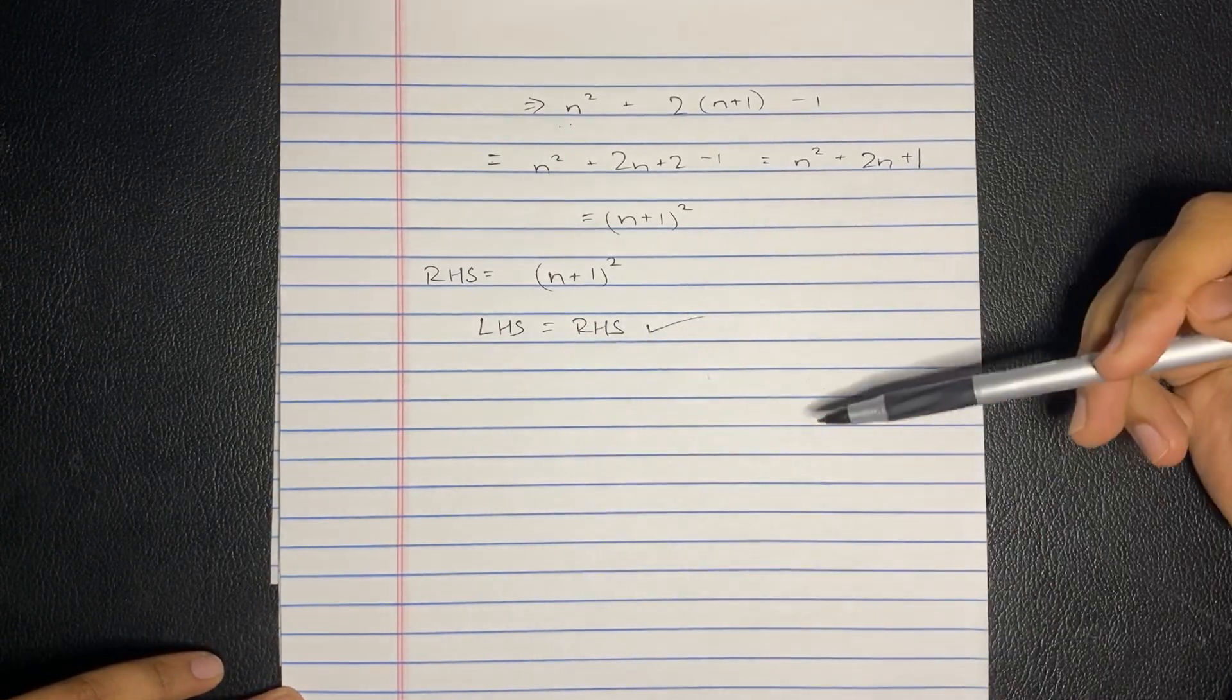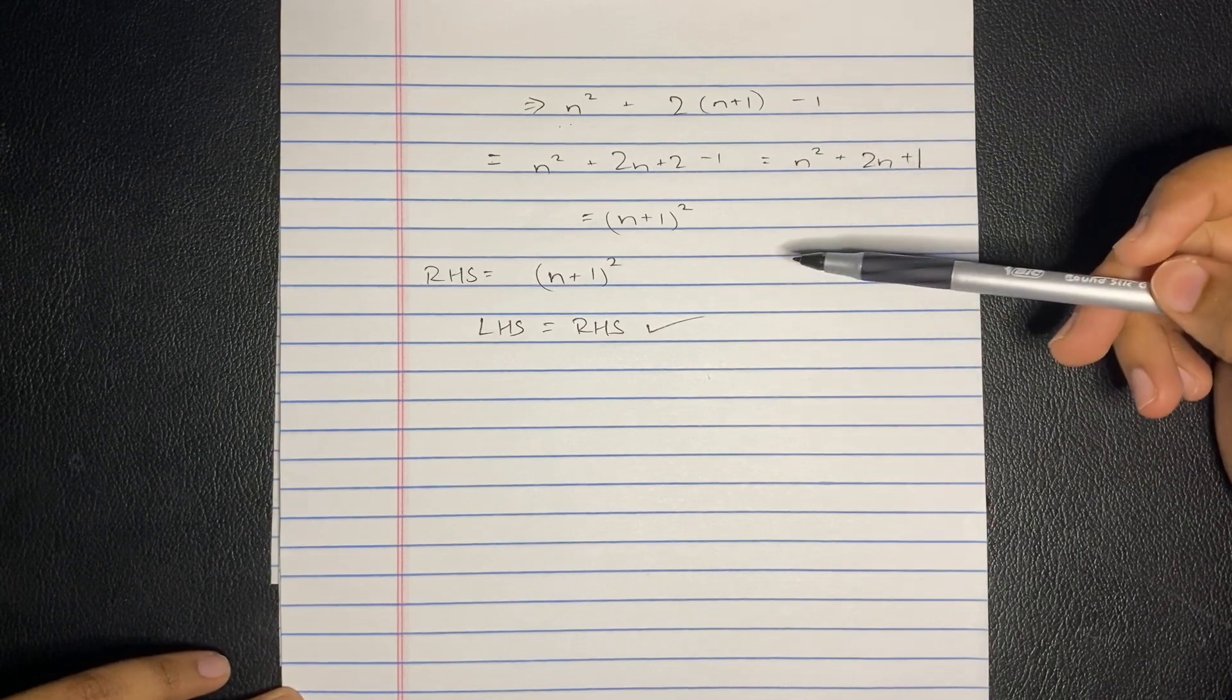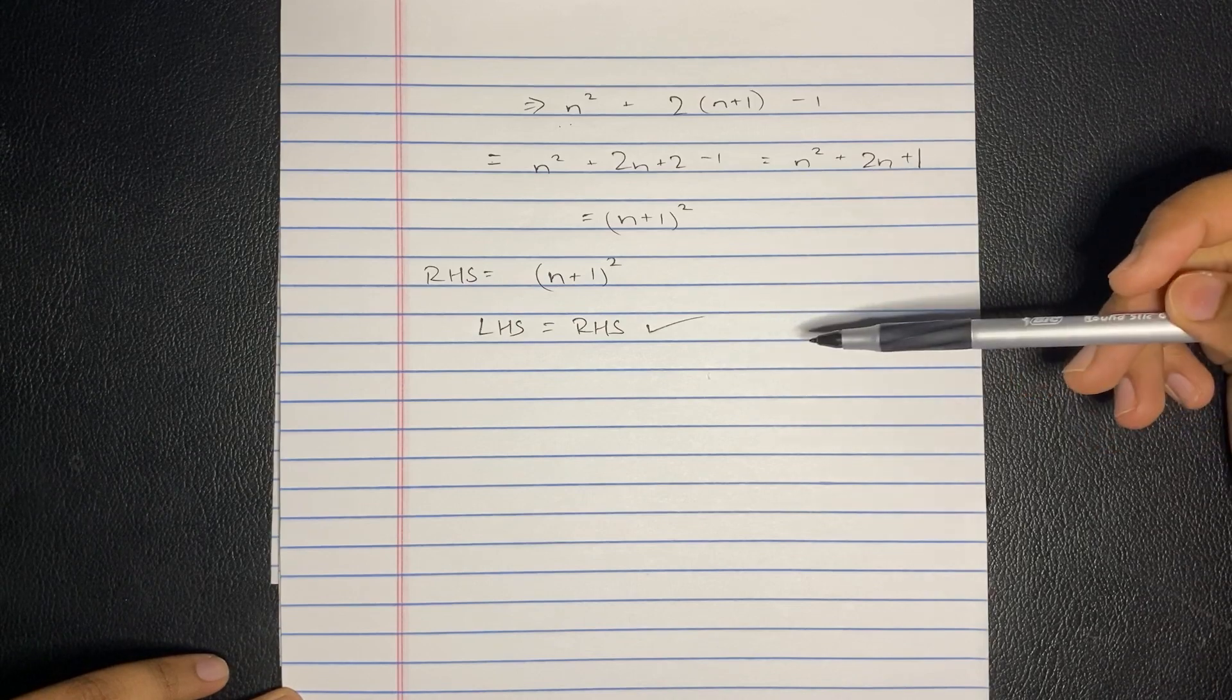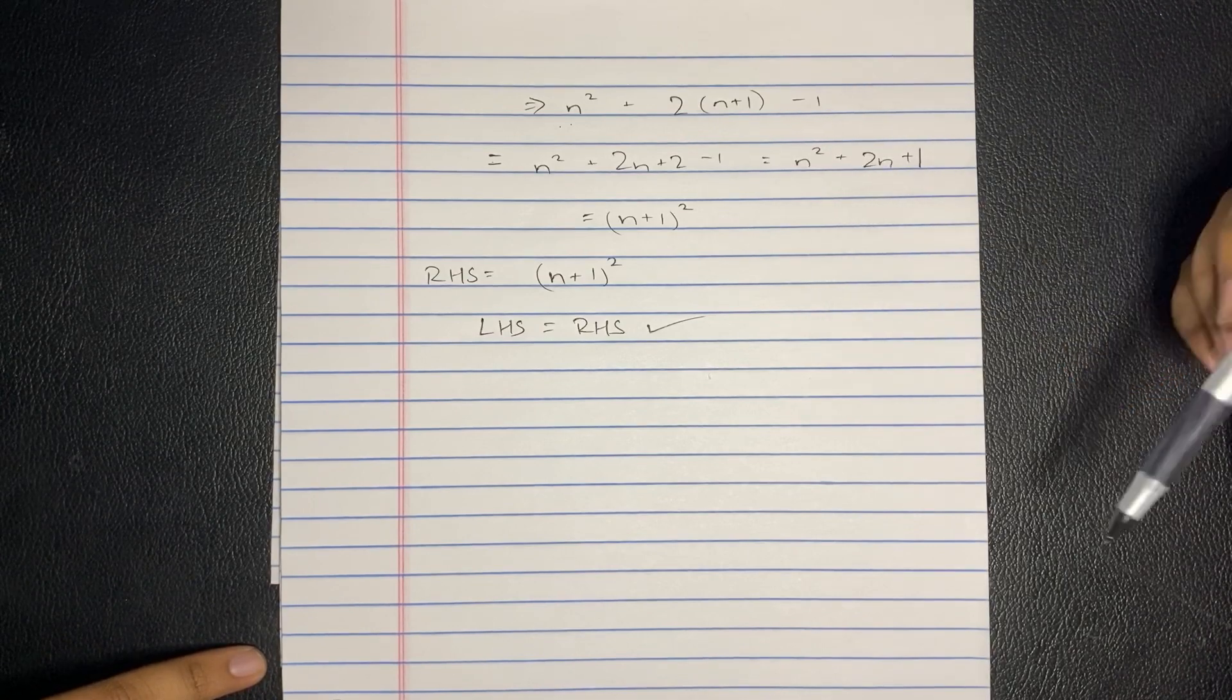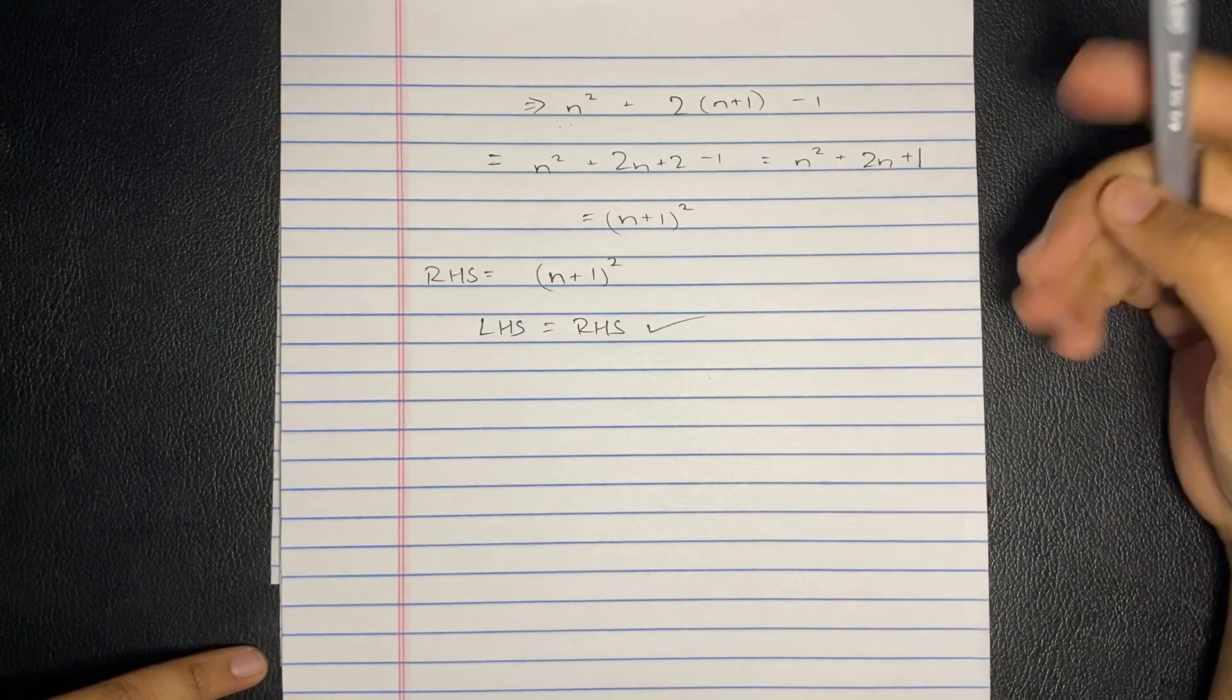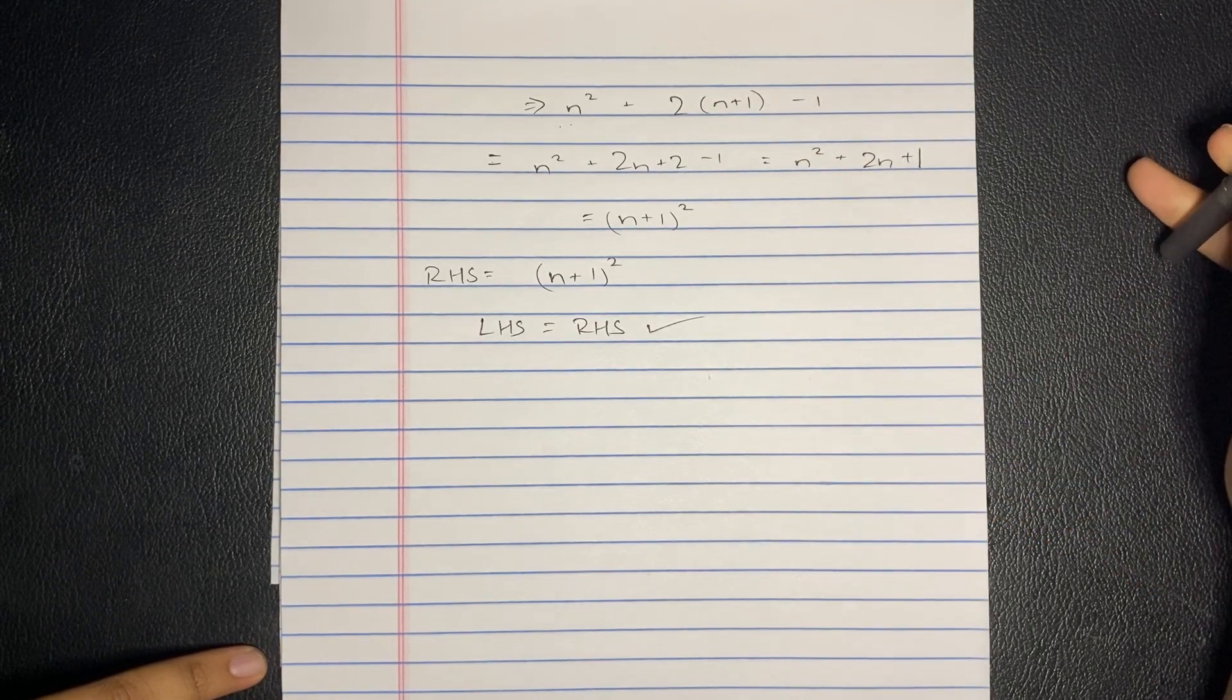So since we proved step 1, and since we proved step 2, we thus proved that the sum of the first n odd numbers equals n squared. And that's it. We had to do two quick steps. If you do have any questions, I know this was a little bit complicated, leave them in the comment section below. And yeah, a thumbs up and a like will always be appreciated. But yeah, until next time, peace out.